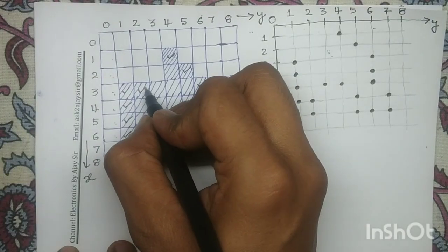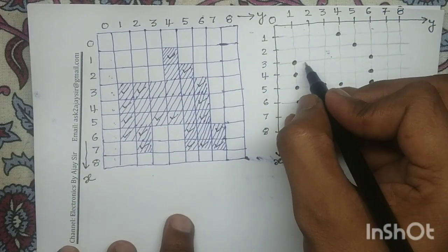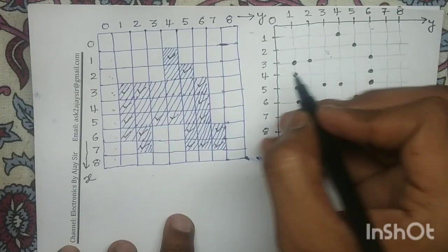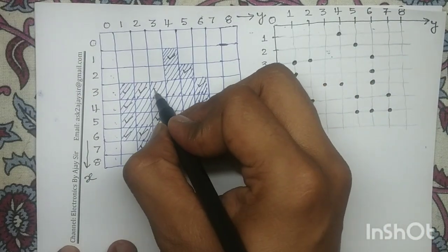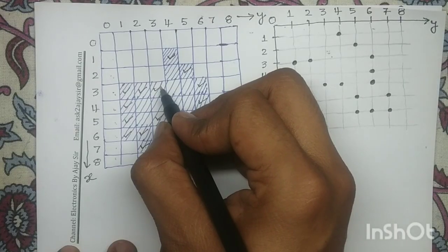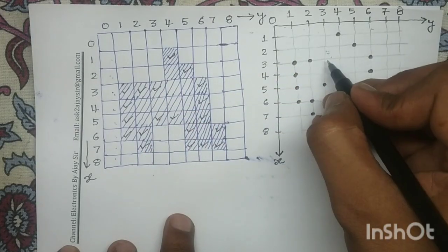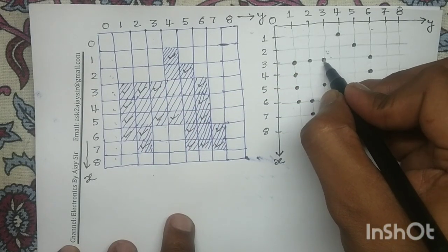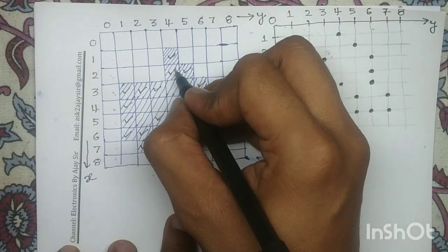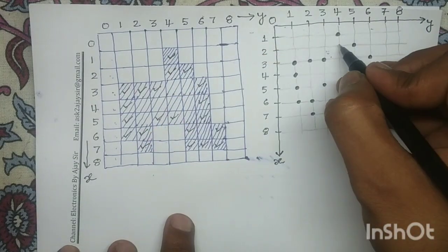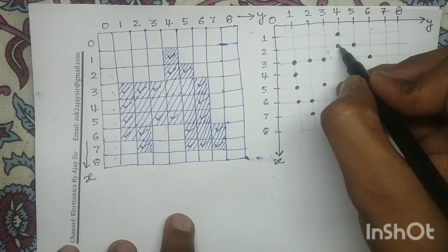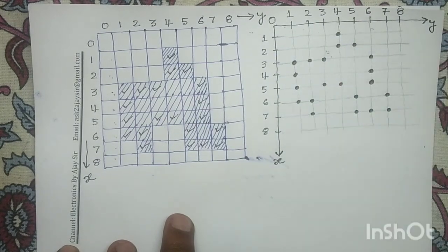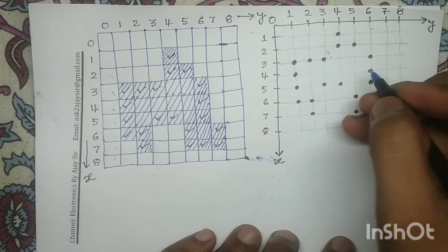Next, this is our next boundary pixel having the coordinate 3,2, so 3,2 is this pixel. Next, this pixel has coordinate 3,3, so let me mark 3,3. Our next boundary pixel has coordinate 2,4, so 2,4, and finally we reach our starting point — so these are the boundary pixels. Now let me connect these boundary pixels in the clockwise direction as mentioned in the question.